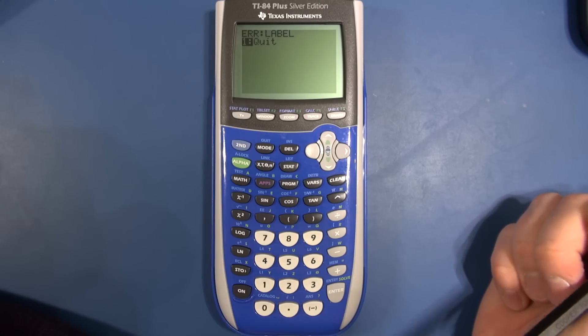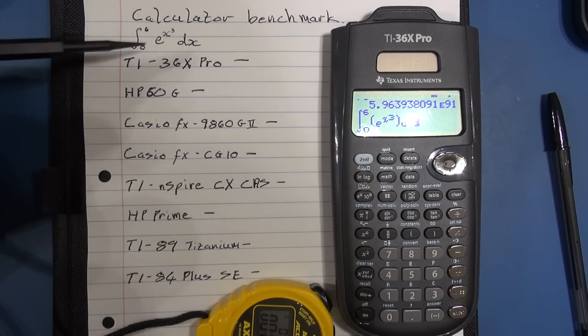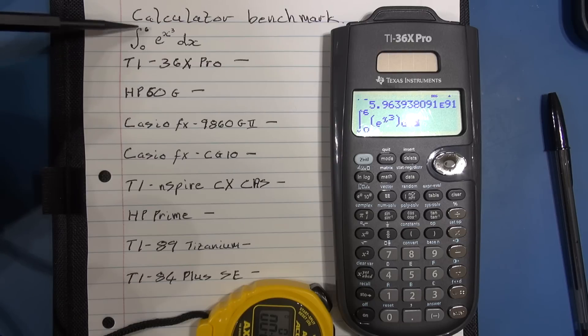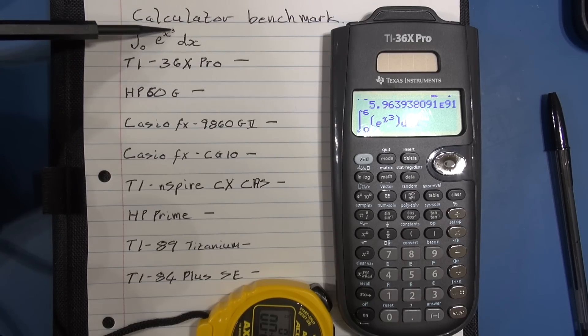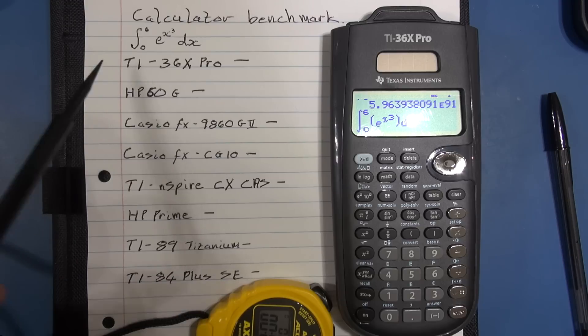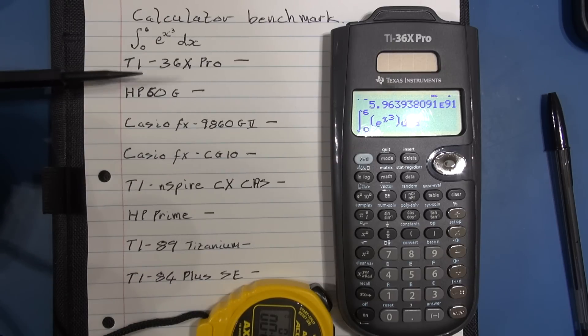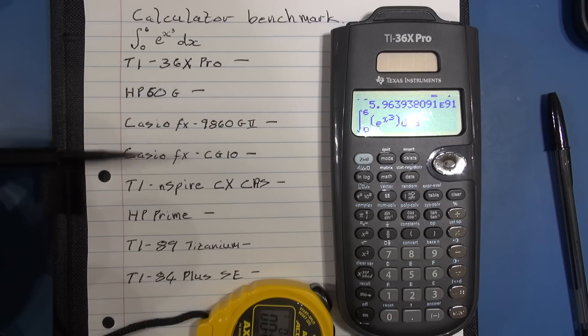So let's move on and have a look at that little integral problem and how it runs out across the rest of the calculators. Right so we're ready to go. What I've got, I've got a sheet here where I've got the calculator benchmark as noted. It's a definite integral between zero and six of e, the natural number e, x raised to the power x cubed dx. Now we're going to run that across all these calculators. I've got a stopwatch. We're going to time it and the reason I've got them in this order will probably show it. I just want to show some kind of contrasting results and then perhaps some interesting results towards the end.